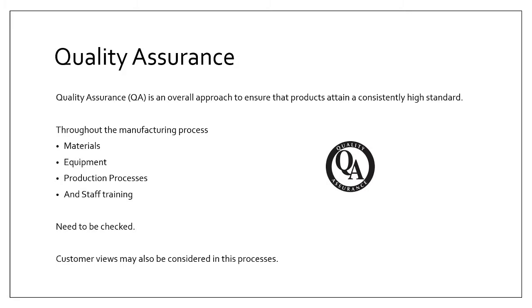Quality assurance is about how you make sure things are going to be made right before you set everything up — it's the whole process of setting things up to ensure they're done to the high standard required. Things to be checked include: the materials — is it the right quality, thickness, size, and colour? The equipment — is it fit for purpose, are the moulds clean, are the blades sharp, is it the right drill bit? The production process — run it through and check it works correctly. And staff training — making sure everyone is trained properly so they know what they're doing.